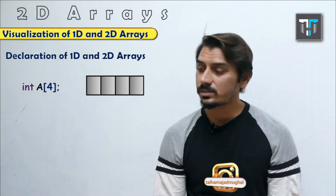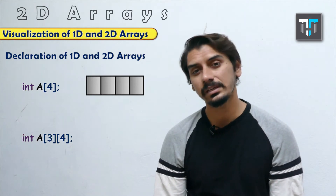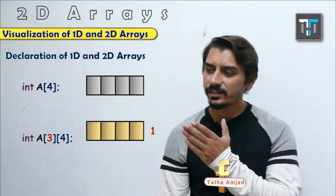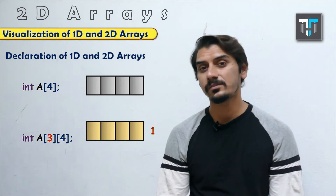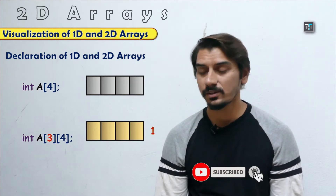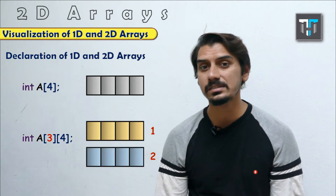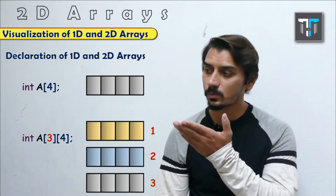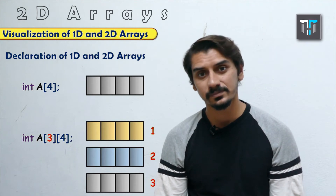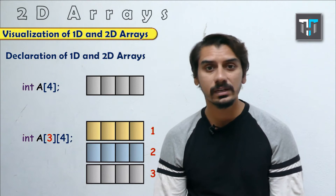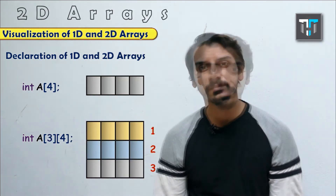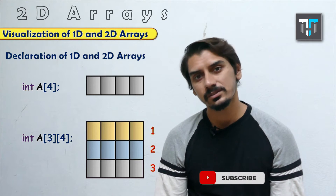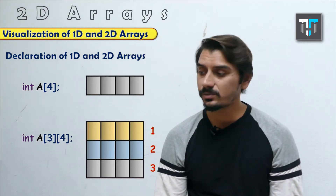For declaring a 2D array, it is written as int a[3][4]. To visualize it, think of it as an array of arrays — an array which has multiple arrays inside it. So 3 and 4 means 3 rows of arrays, and each of those arrays has 4 elements (length 4).